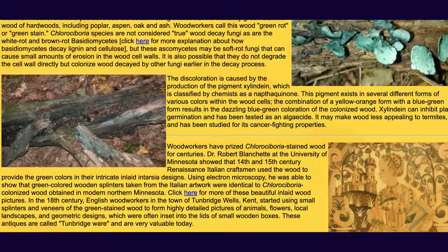Chlorociboria species are not considered true wood decay fungi, as are the white rot and brown rot basidiomycetes, but these ascomycetes may be soft rot fungi that can cause small amounts of erosion in the wood cell walls. It is also possible that they do not degrade the cell wall directly but colonize wood decayed by other fungi earlier in the decay process. The discoloration is caused by the production of the pigment xylindein.